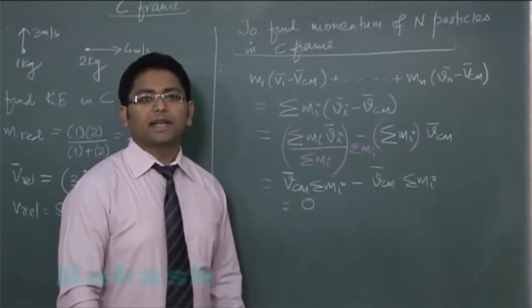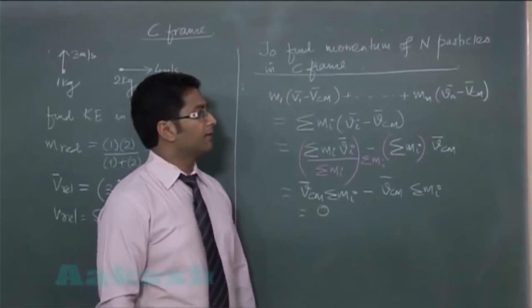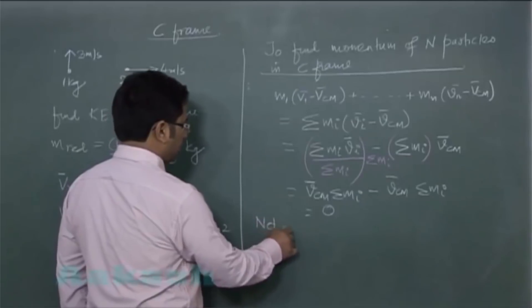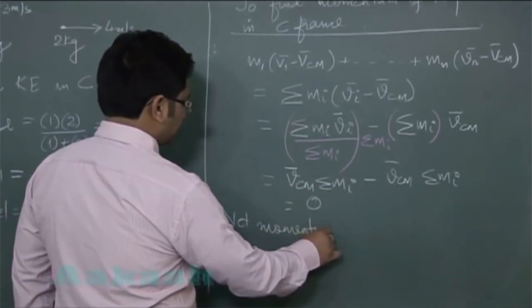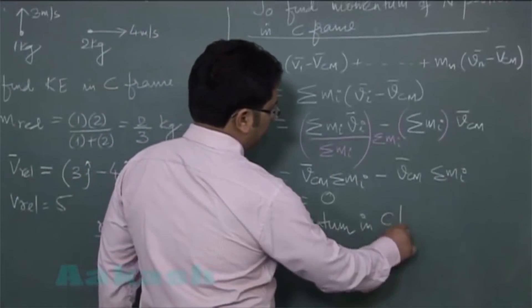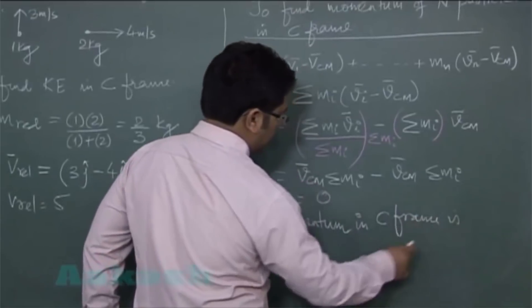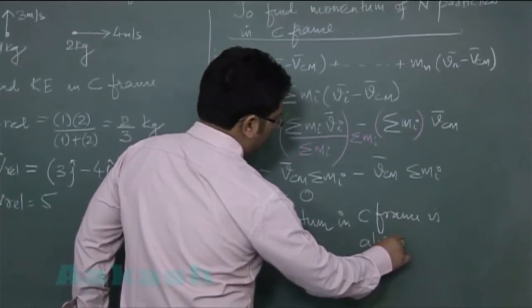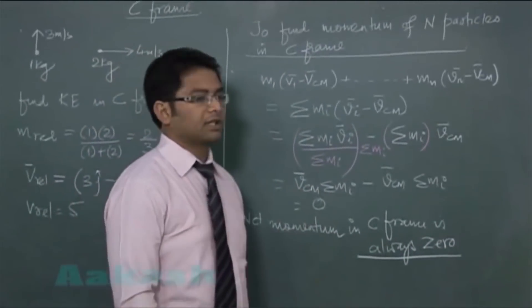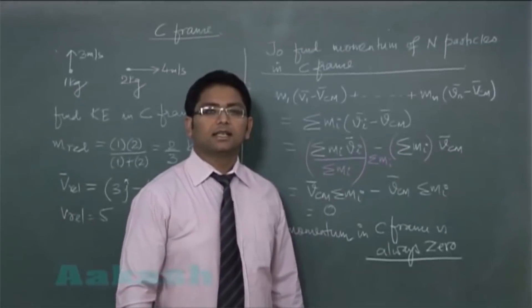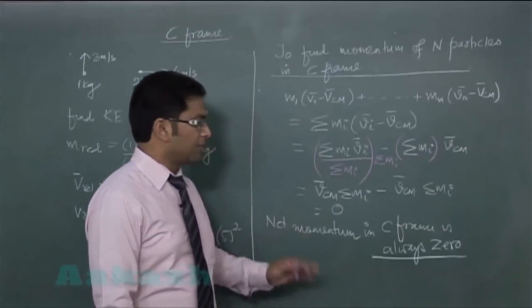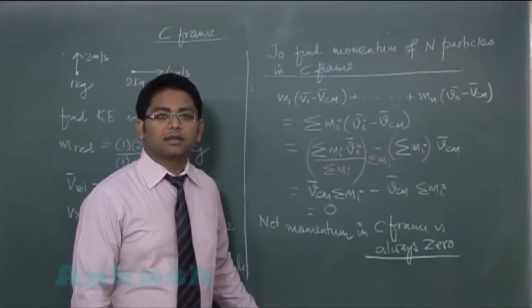It's a very important principle, a very important conclusion that we saw: net momentum in C frame is always zero. That's why center of mass is also called zero momentum frame, because you can see the momentum in the C frame comes out to be zero.